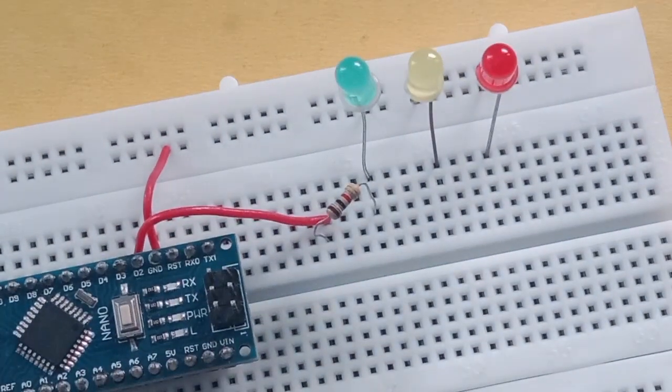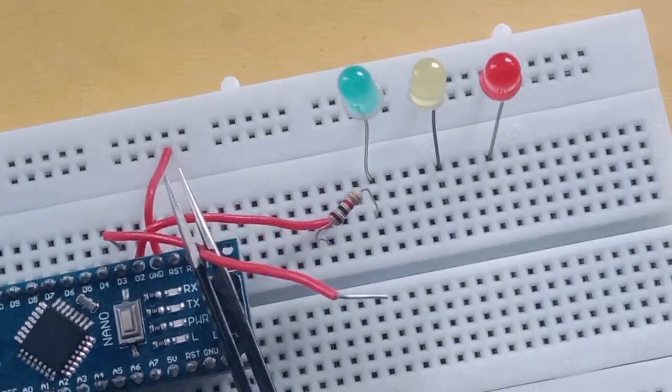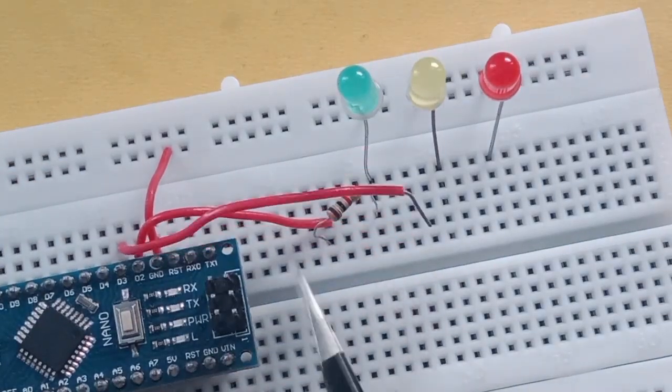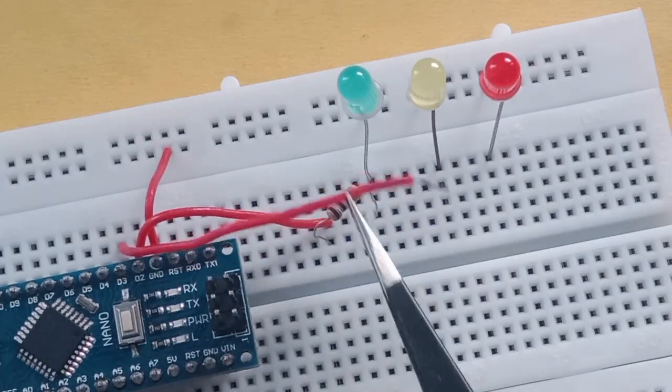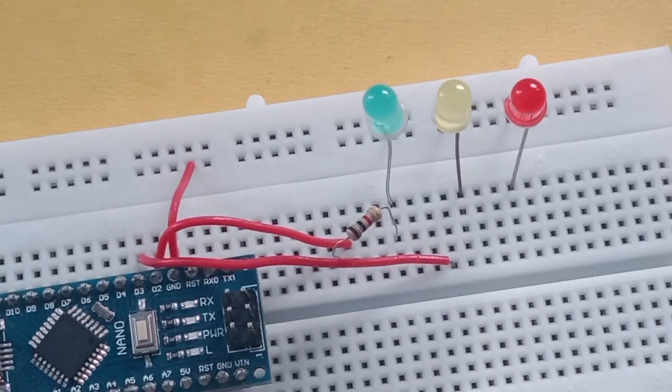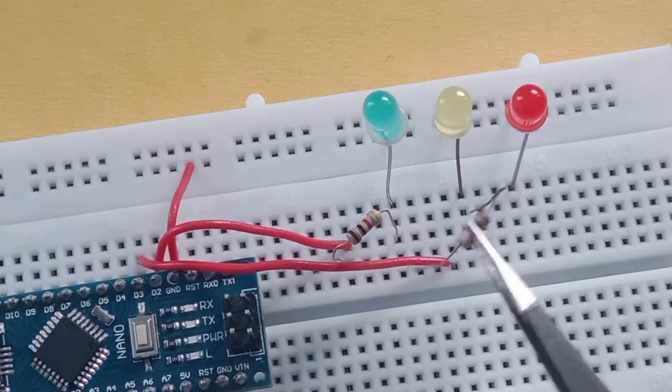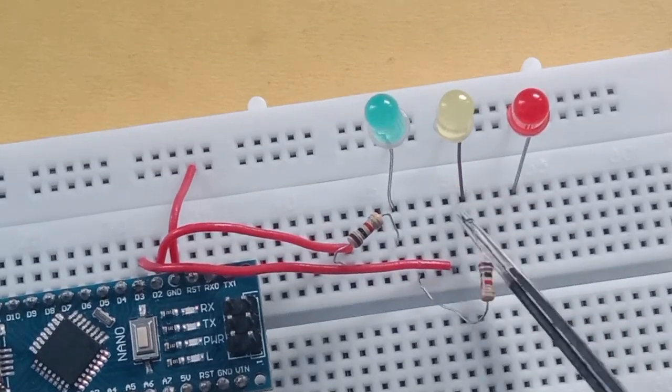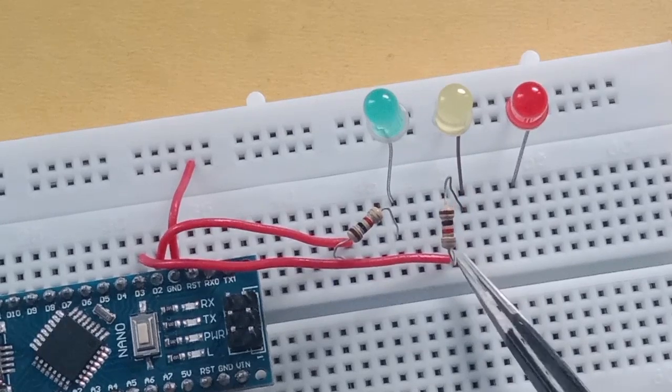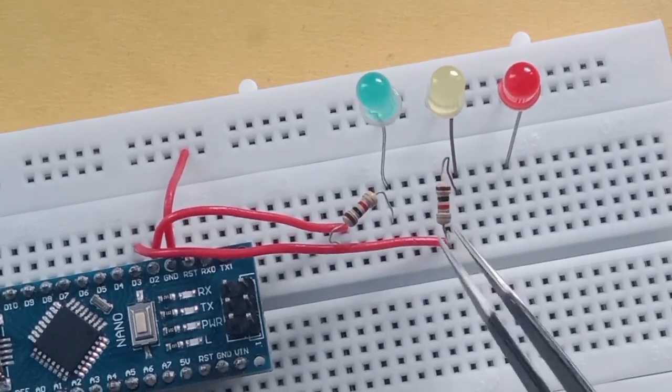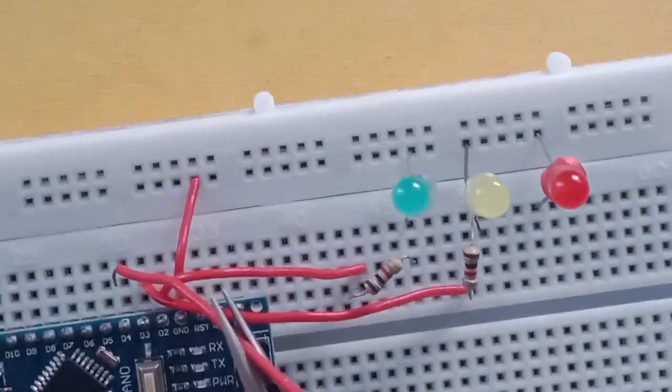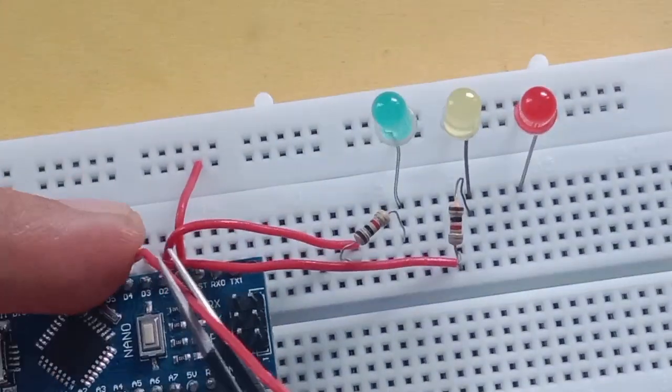D2 is done. Now it's time to connect the yellow LED to D3. The last part is the red LED which will go to D4 and again it has to go to resistor.